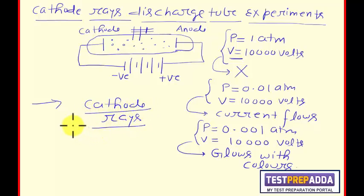Later on, we found that these cathode rays are made up of negatively charged material particles, negatively charged and having mass.